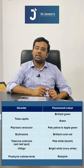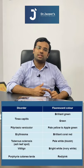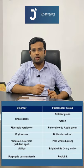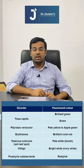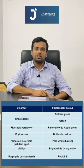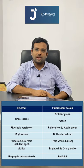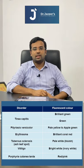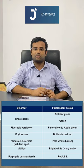The important findings to remember for your exams: Pityriasis versicolor gives a yellowish fluorescence. Erythrasma gives a coral red fluorescence. In the case of Tinea capitis, you can see a greenish fluorescence.